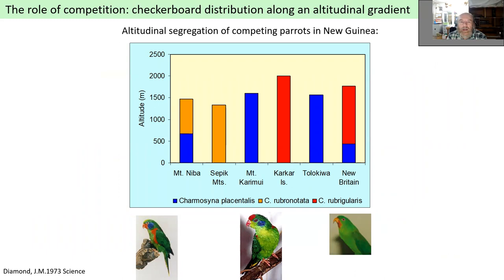Another interesting feature of elevation gradients is altitudinal segregation due to competition. A classical study by Jared Diamond at New Guinea islands examined three closely related parrot species. On some mountain ranges each species occupies the entire available elevation gradient alone, but when two or more are coexisting on the same mountain, they always separate along the elevation.